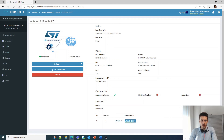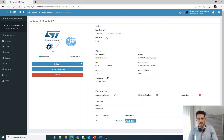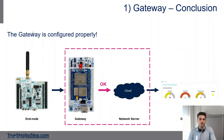So that's it. When you make changes, I recommend resetting the board and refreshing the page. But in my case, I haven't made any changes. We've checked that the gateway is configured properly and it is working. Now we're going to move on to the next step, which is to enroll the end node.